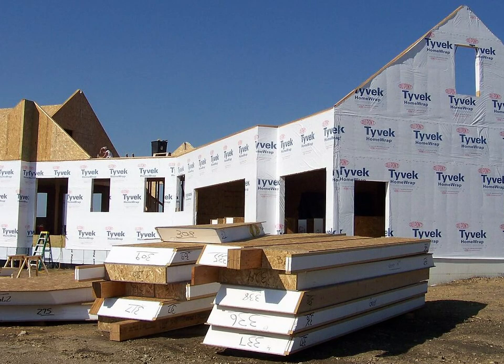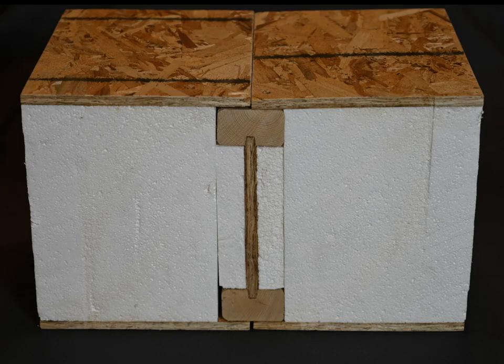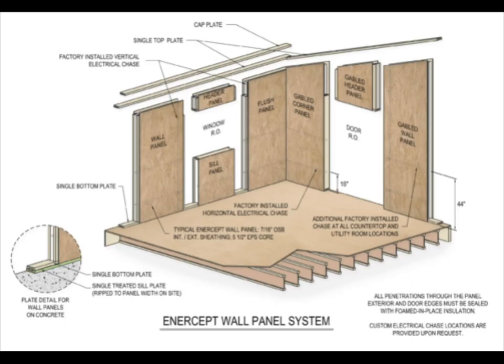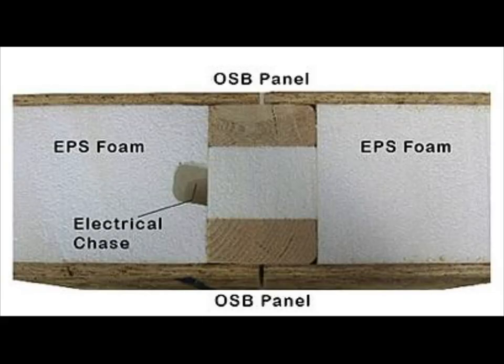SIPs do a far superior job in reducing thermal bridging compared to traditional stick frame buildings. For example, Intercept SIPs almost completely eliminate thermal bridging across uninterrupted areas of the panel. Walls of typical stick framing without insulated sheathing have thermal bridging reduction factors often calculated at about 25% of the total wall area — that's a lot of thermal bridging. SIPs have only about 3 to 5%.